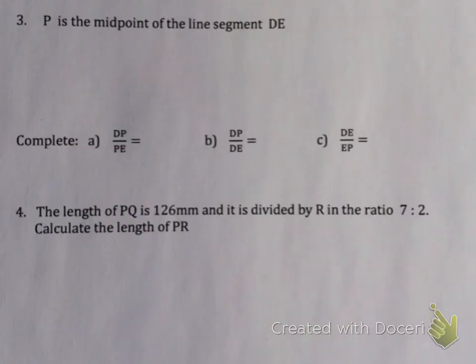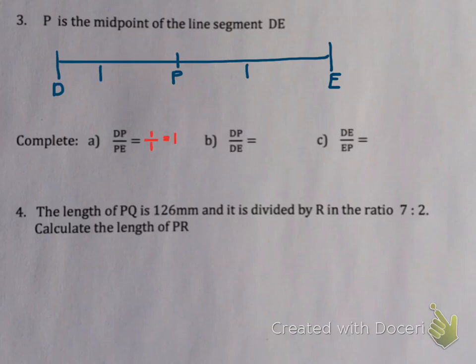So let's look at number 3. P is the midpoint of line segment DE. So there's DE and I put P in the middle. Now this means that DP is 1 part and PE must be 1 part because they must be equal. So this is pretty simple. So what's the ratio of DP to PE? Well 1 to 1, which is 1. What's the ratio of DP to DE? Well that's 1 part to 2 parts. And DE to EP, 2 parts to 1 part, which will simplify to 2. So that was a pretty easy example.